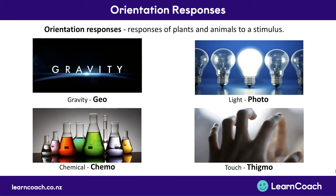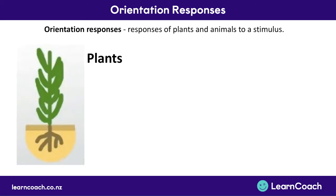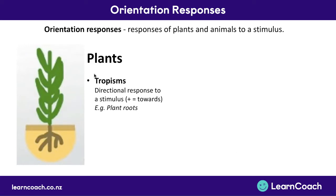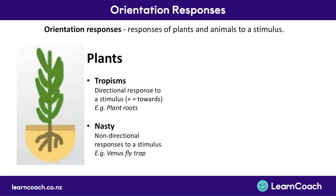Gravity, light, chemicals, and touch can all affect how plants and animals respond. Plants can have a directional response called a tropism — for example, plant roots grow in the same direction as gravity. Plants can also have a non-directional response, where the plant responds to a stimulus but not in a particular direction. When a Venus flytrap closes over a fly, it closes the same way regardless of direction — that's called a nastic response.